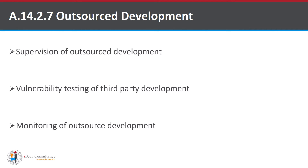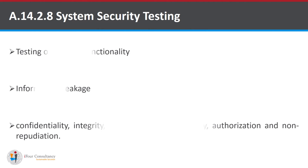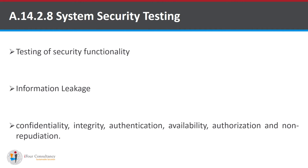The seventh one is Outsource Development. It states that the organization shall supervise and monitor the activity of outsourced system development. The eighth one is System Security Testing. It states that testing of security functionality shall be carried out during the development process. Information leakage has to be prevented in this testing.